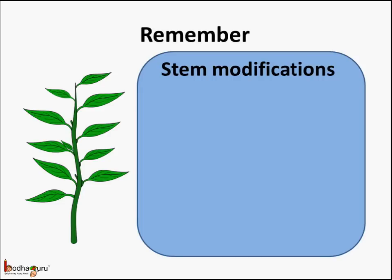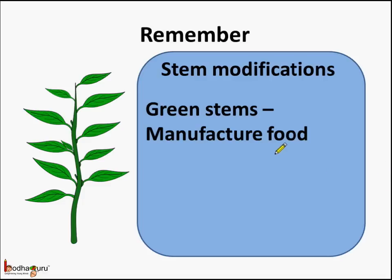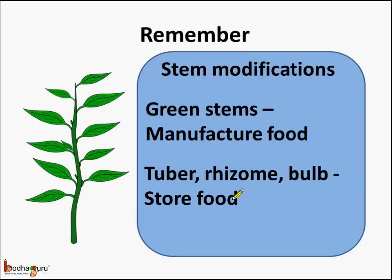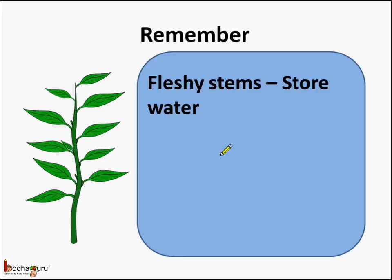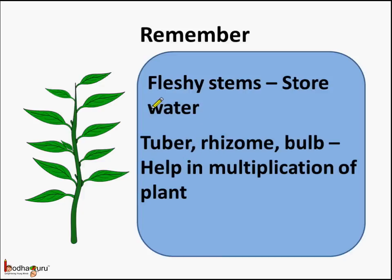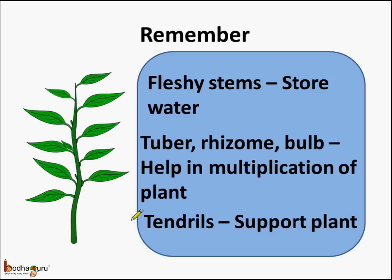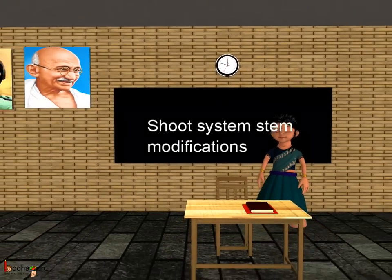So remember children, in certain plants the stem gets modified to perform special tasks. The green stems manufacture food, as we saw in the case of cactus. The tuber, rhizome, and the bulb are the underground stems which store food. Also the fleshy stems store food, as in the case of cactus, jade plant, etc. And the tuber, rhizome, and bulbs, apart from storing food, help in the multiplication of the plant. Last but not the least, in certain plants the stem gets modified into tendrils which support the plant to climb up. So that was all about the modification of stems.